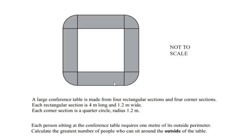Hello and welcome back to my channel. In this video we are going to solve an example on mensuration. A large conference table is made from four rectangular sections and four corner sections.